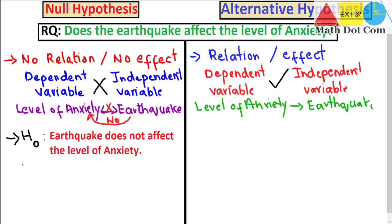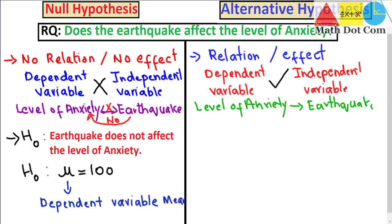The null hypothesis can further be written as H0: μ = 100. Mu refers to the population mean of the anxiety level — it is the dependent variable mean. So this means the mean anxiety level of the population equals 100 and is not affected by the earthquake. Even if there is an earthquake, the mean anxiety level will remain 100. We are basically stating there is no impact of the earthquake on the mean anxiety level of the population.